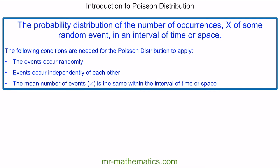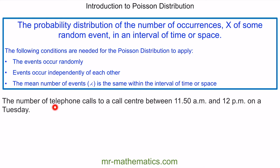Here are a couple of real-life examples. The number of telephone calls to a call center between 11:50 and 12:00 p.m. on a Tuesday. We could use a Poisson distribution because the number of occurrences would be the number of telephone calls, the interval of time would be 11:50 to 12:00 p.m. on a Tuesday, the events would occur randomly and independently, and you would expect the mean to be the same within this time.